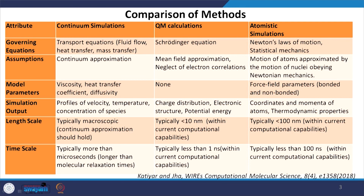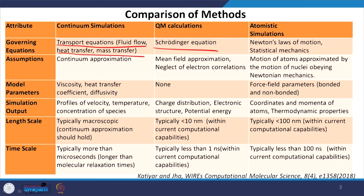In continuum simulations, the governing equations are transport equations — the Navier-Stokes equations for fluid flow, Fourier's law for heat conduction. In quantum mechanical or quantum chemical simulations we solve the Schrödinger equation. In atomistic or coarse-grained simulations we solve Newton's laws of motion for MD, and we use the tools of statistical mechanics for both MD and more so for Monte Carlo simulations.